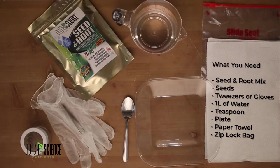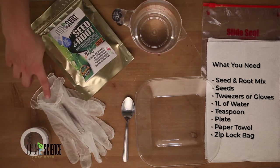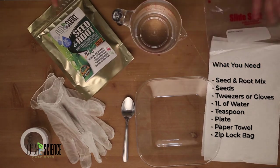You're going to need your seed and root mixture, your seeds, tweezers or gloves, some water, a spoon, plate, paper towel, and a Ziploc bag for later.